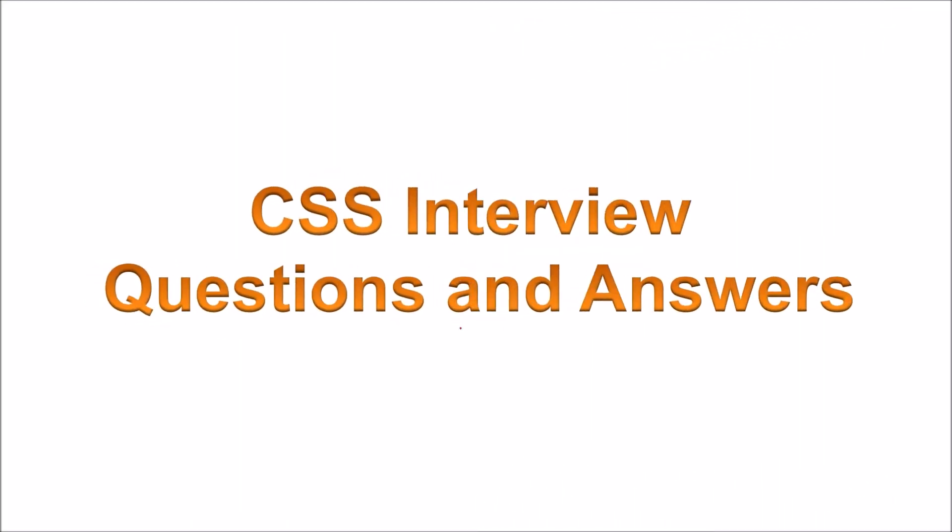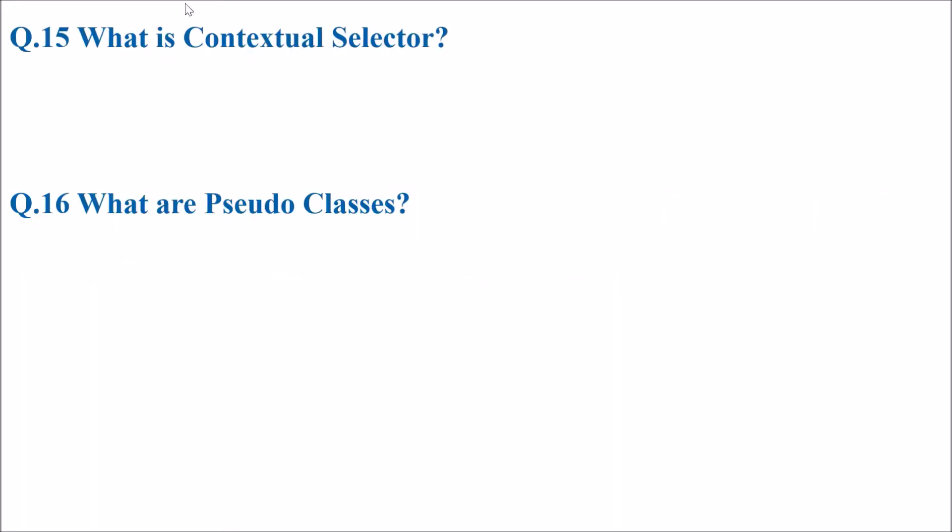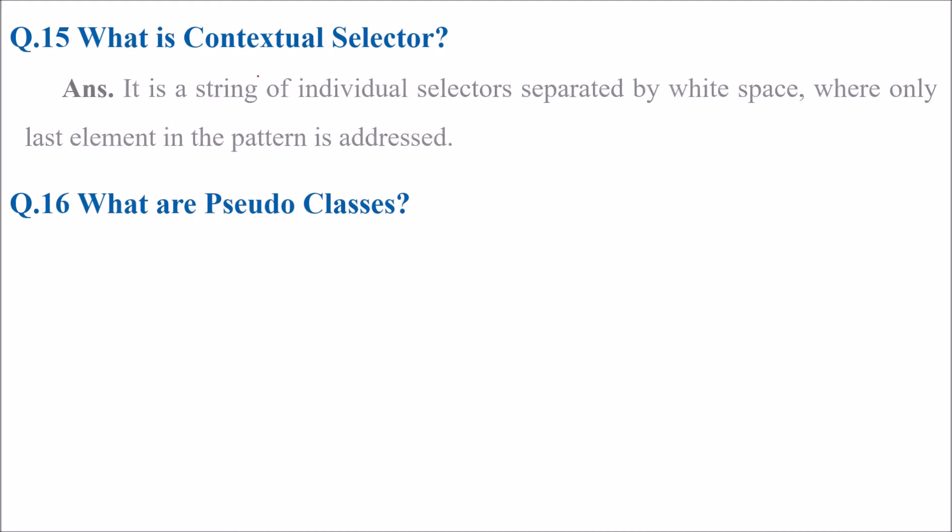We were looking at various CSS interview questions and answers. Next one is what is contextual selector. Contextual selector is a string of individual selectors separated by white space where only last element in the pattern will be addressed.